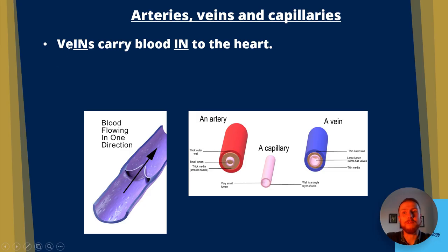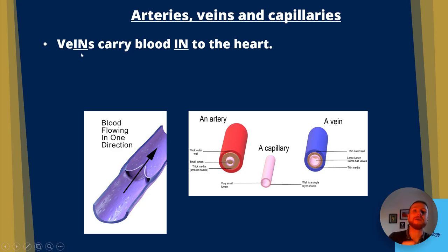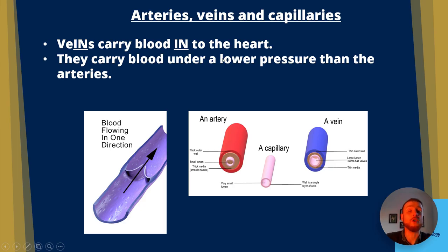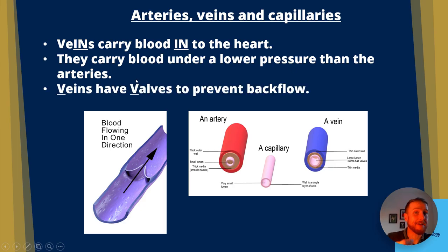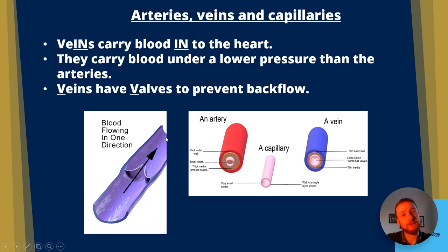Veins carry blood into the heart — remember, the word 'vein' contains 'IN.' For every other organ, veins vacate and leave. Veins carry blood under much lower pressure than arteries, so they have an adaptation called valves which prevent backflow. Blood flows in one direction, and if the flow isn't strong, the valve shuts to keep the blood in place until the heart beats again.